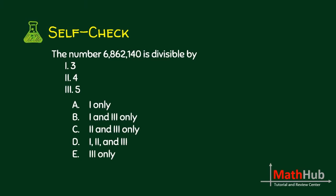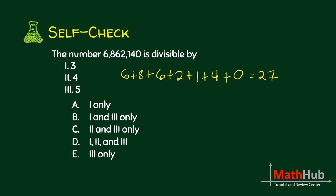First number: 6,862,140 is divisible by 3 by adding all the digits. So 6 plus 8 plus 6 plus 2 plus 1 plus 4 plus 0. That is 14 plus 6 is 20, plus 2 is 22, plus 4 is 23, plus 4 is 27. So therefore, it is divisible by 3.